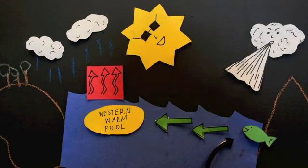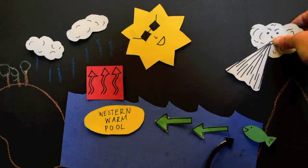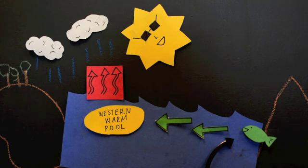Okay, so that's a normal year, but what happens when El Niño comes to town? He starts by weakening the trade winds, or sometimes even reversing them. Why does he do this? Scientists still don't know.